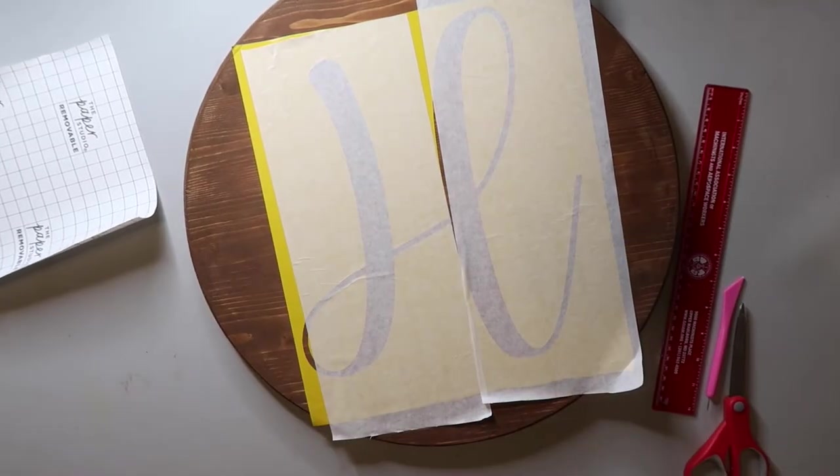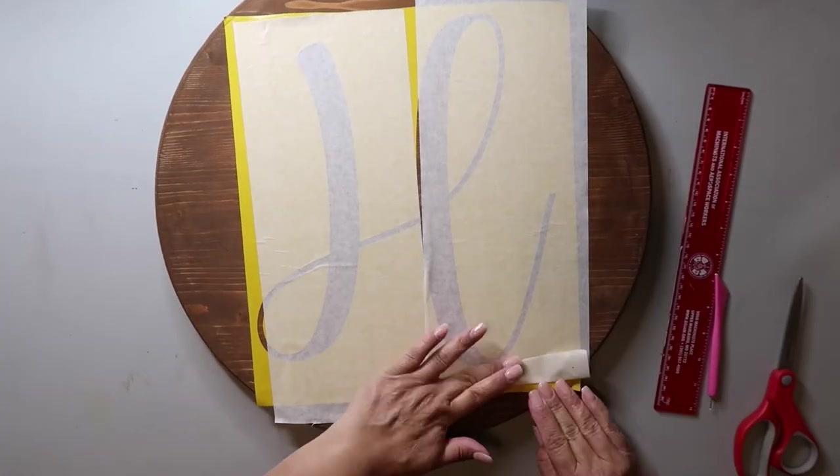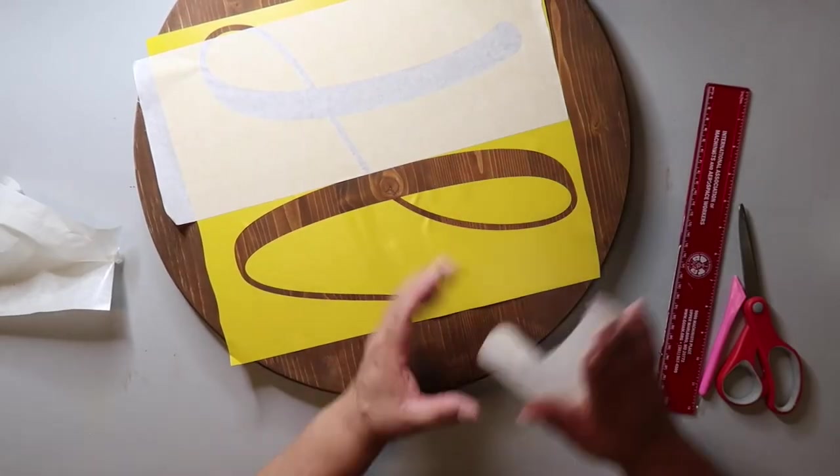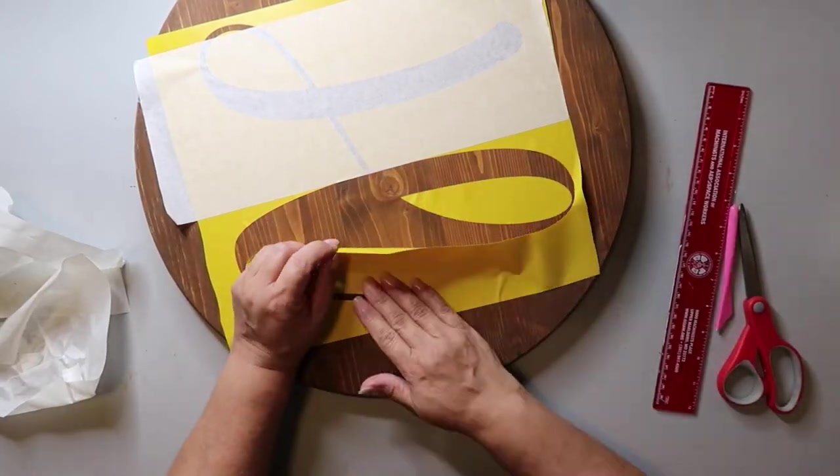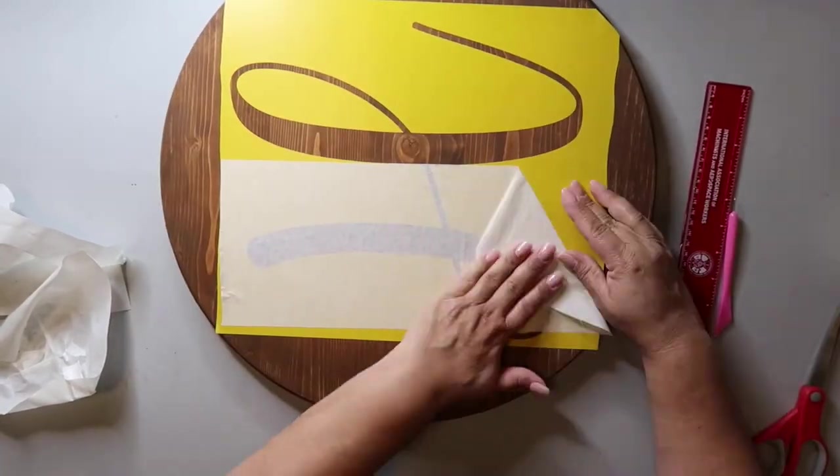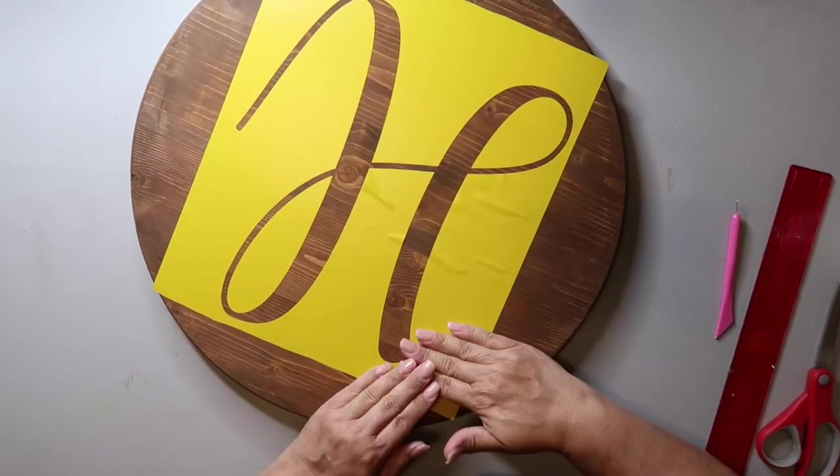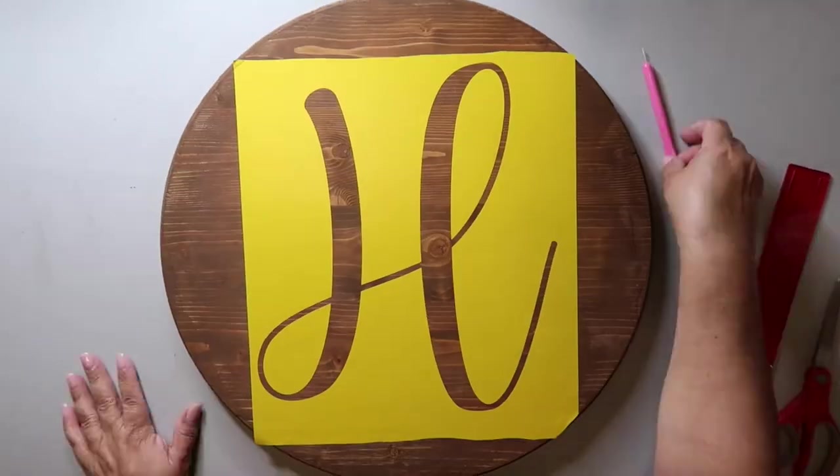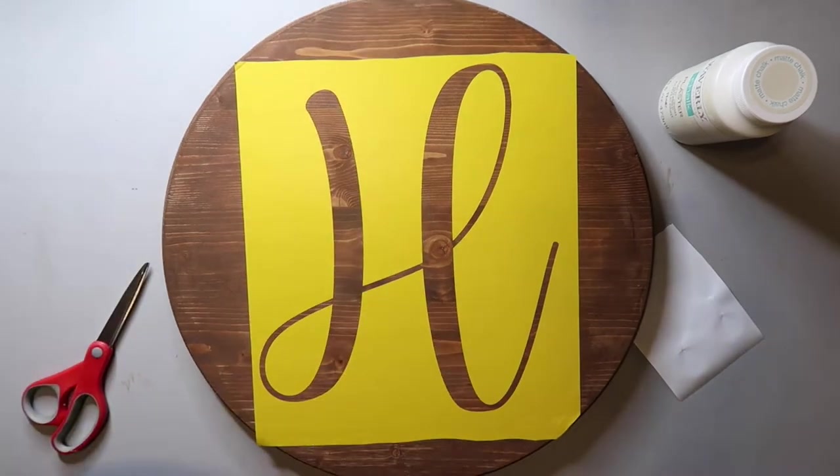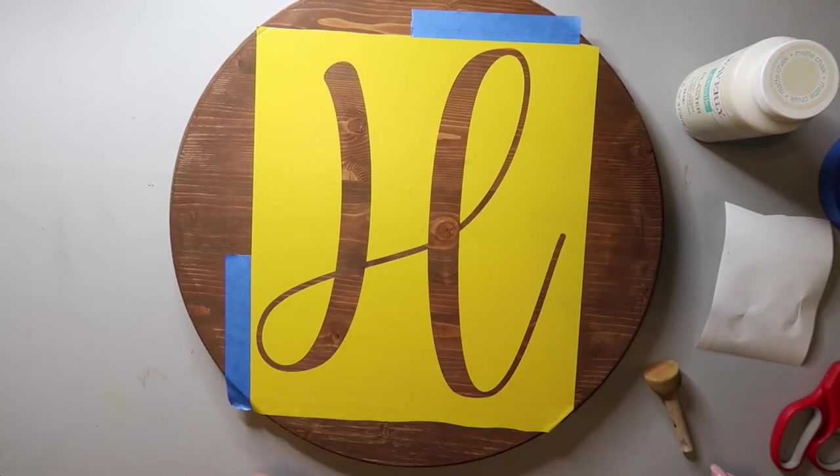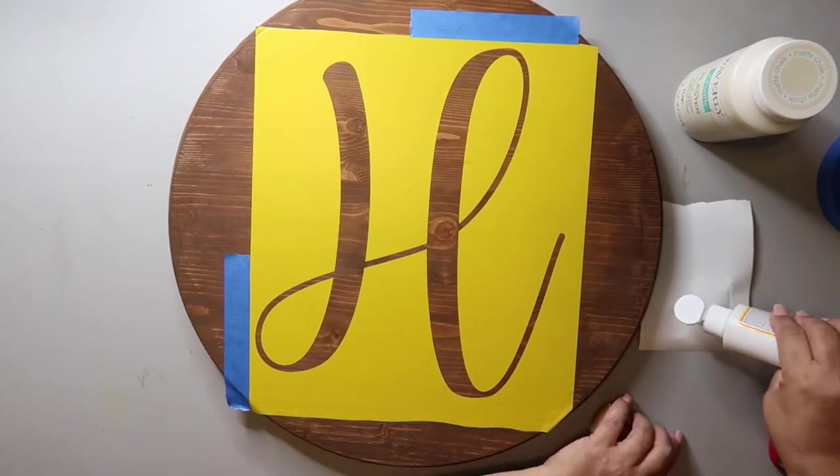So I redid the stencil and this time I was more careful. What I ended up doing was keeping the vinyl backing on and placing it on the wood round, and then I put a piece of painters tape across the middle. Then I'm taking off half of the backing, smoothed it down, and then I worked on the other half. The painters tape kept the stencil where I wanted it and it helped everything keep it in place, and then I removed the transfer tape and tried to just keep smoothing it.